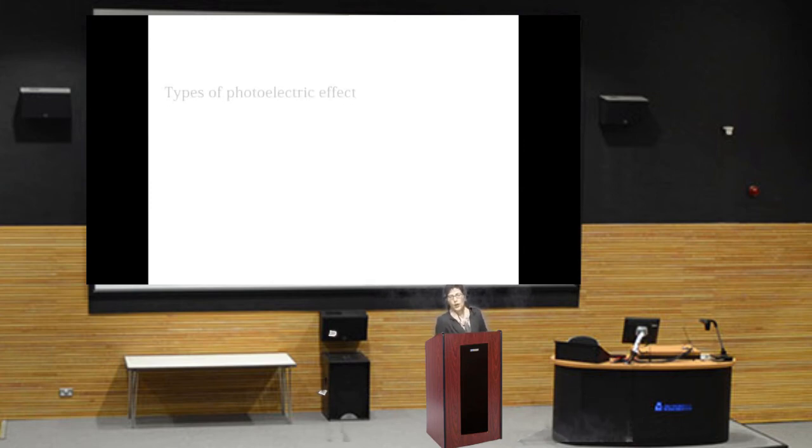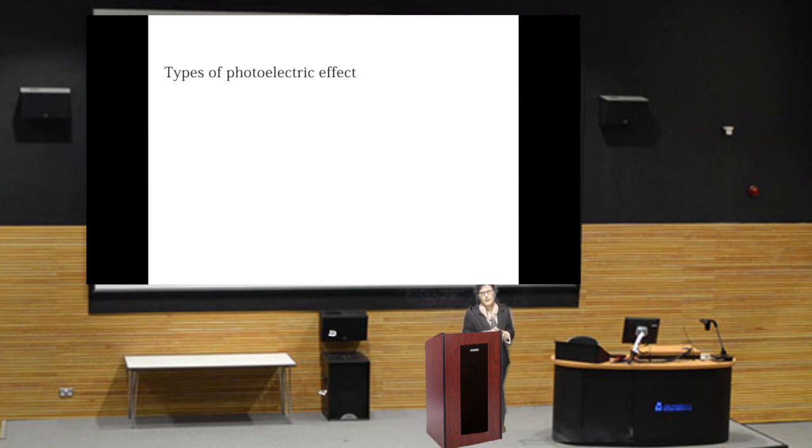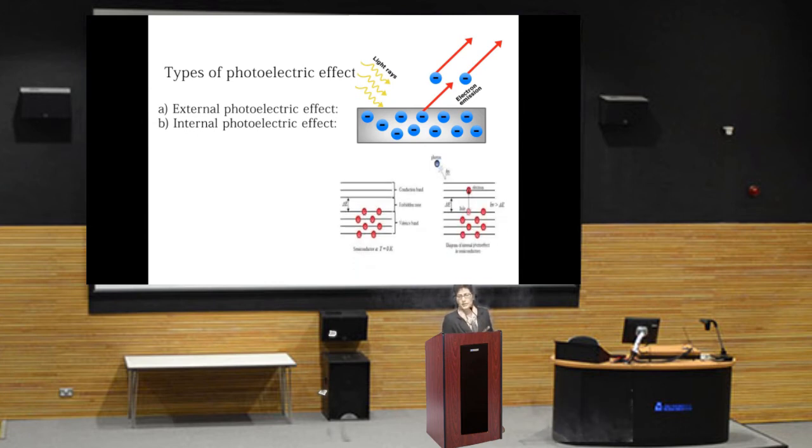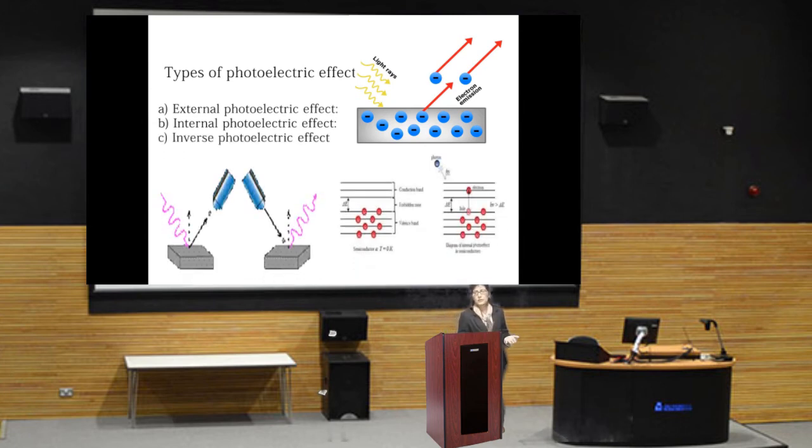Now we will see the types of photoelectric effect. According to the way of electron formation by the absorption of electromagnetic radiation, we can categorize it into three forms. One is the external photoelectric effect, other is the internal photoelectric effect, and third is the inverse photoelectric effect.